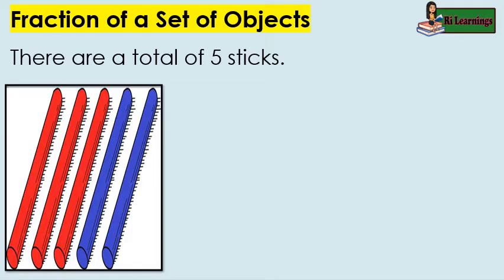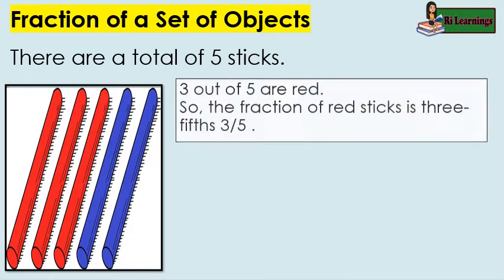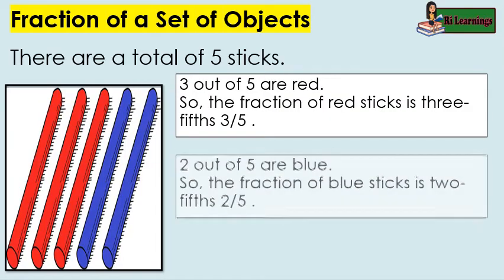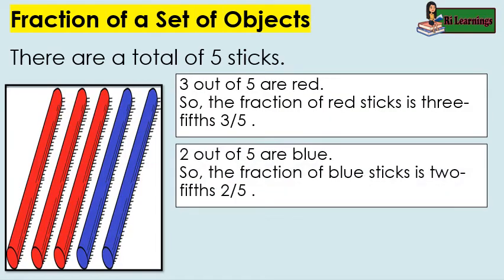Fraction of a set of objects: there are a total of five sticks. Three out of five are red, so the fraction of red sticks is three fifths. Two out of five are blue, so the fraction of blue sticks is two fifths.